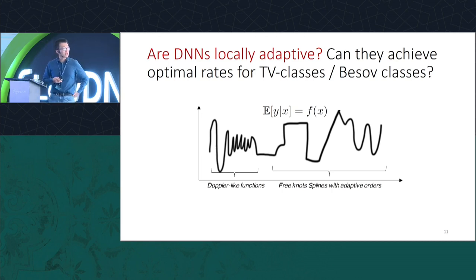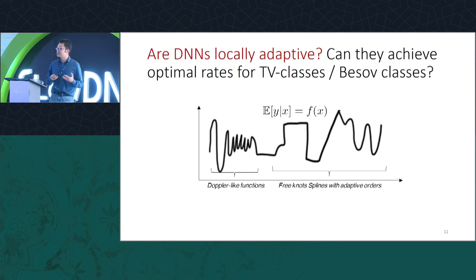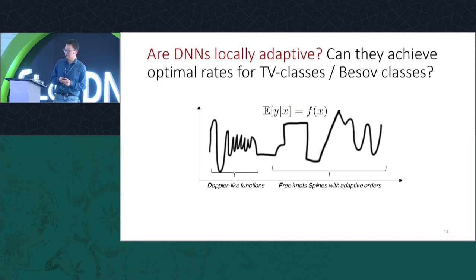We'll also consider even harder families of problems with even more heterogeneous smoothness — compositions of different types of functions. For example, piecewise linear on one region, piecewise smooth on another, and a smooth function with changing frequency on yet another. Hopefully deep neural networks will do well on these families of functions, which fail even many optimal approaches in the classical nonparametric regression world.